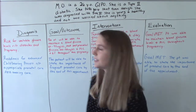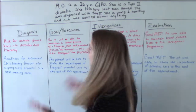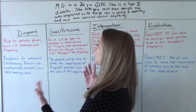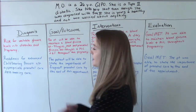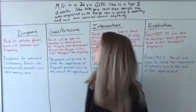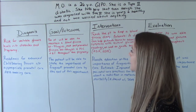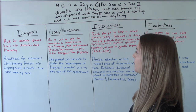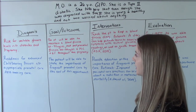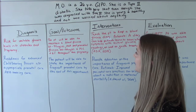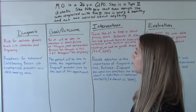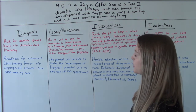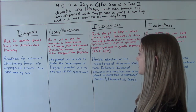So the first diagnosis we've chosen is risk for unstable glucose levels related to the diabetes and the pregnancy. Our goal: the patient will be able to maintain a blood glucose level of 60 to 99, peak post-prandial levels 100 to 129, and an A1C of less than 6% throughout the pregnancy.